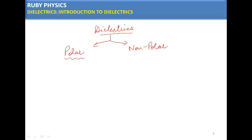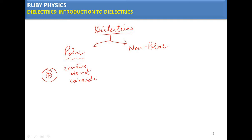What do you mean by a polar dielectric? In a polar dielectric, the center of the positive charge and the center of the negative charge do not coincide. If these two centers coincide, then the dipole moment will be zero. But if the centers of positive and negative charges do not coincide, there will be a dipole moment, because dipole moment is charge multiplied by the distance between the charges.